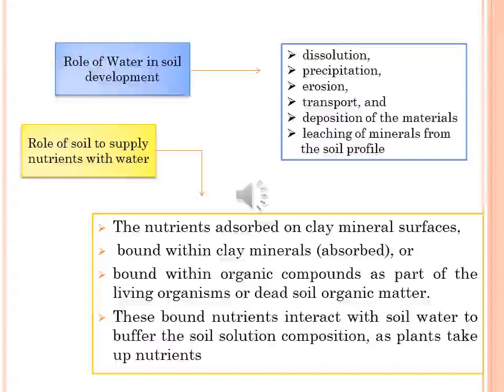Water is central to the dissolution, precipitation, and leaching of minerals from the soil profile. Water affects the type of vegetation that grows on a soil, which in turn affects the development of the soil — a complex feedback. Soil supplies plants with nutrients, most of which are held in place by particles of clay and organic matter. Nutrients may be absorbed on clay mineral surfaces, bound within the clay minerals, bound within organic compounds, or part of living or dead soil organic matter. These bound nutrients interact with the soil water to buffer the soil solution composition as the soil wets or dries out, as plants take up nutrients, or as salts are leached, or acids or alkalis are added.